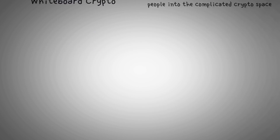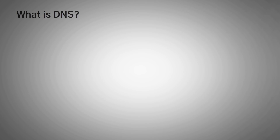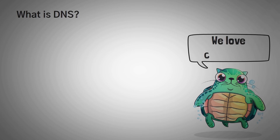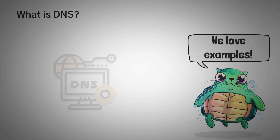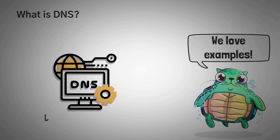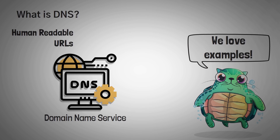Before we actually get to understanding the power of Unstoppable Domains, the first thing we'll need to do is understand DNS. Here at Whiteboard Crypto, we love using examples, so that's exactly what we're going to be using to help you understand DNS. DNS stands for Domain Name Service, which is a fancy way of saying that it is a helpful service which allows us humans to type in human-readable addresses into the search bar.